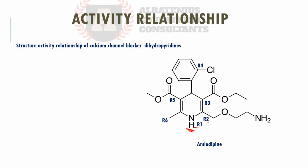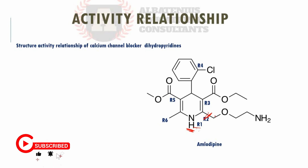R1 and R2 should be smaller alkyl groups. If we replace R2 with a basic amino ethyl ether chain, this is going to result in a more potent drug. Replacement of R2 with an aryl group leads to a loss of activity.